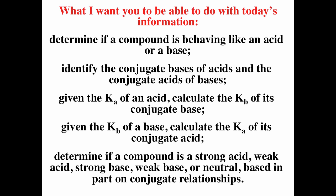After watching this video, you should be able to determine if a compound is behaving like an acid or a base. Using the Bronsted-Lowry theory, you should identify conjugate bases of acids and conjugate acids of bases. Given the Ka of an acid, you should be able to calculate the Ka of its conjugate base, and given the Ka of the base, calculate the Ka of the conjugate acid. You should also be able to determine if a compound is a strong acid, weak acid, strong base, weak base, or neutral.